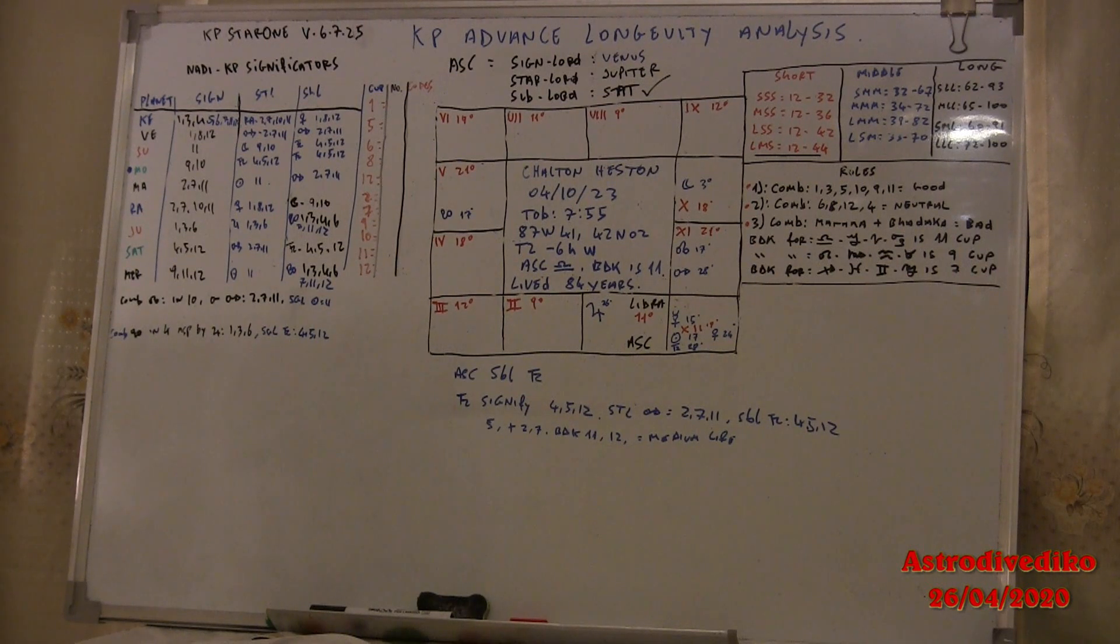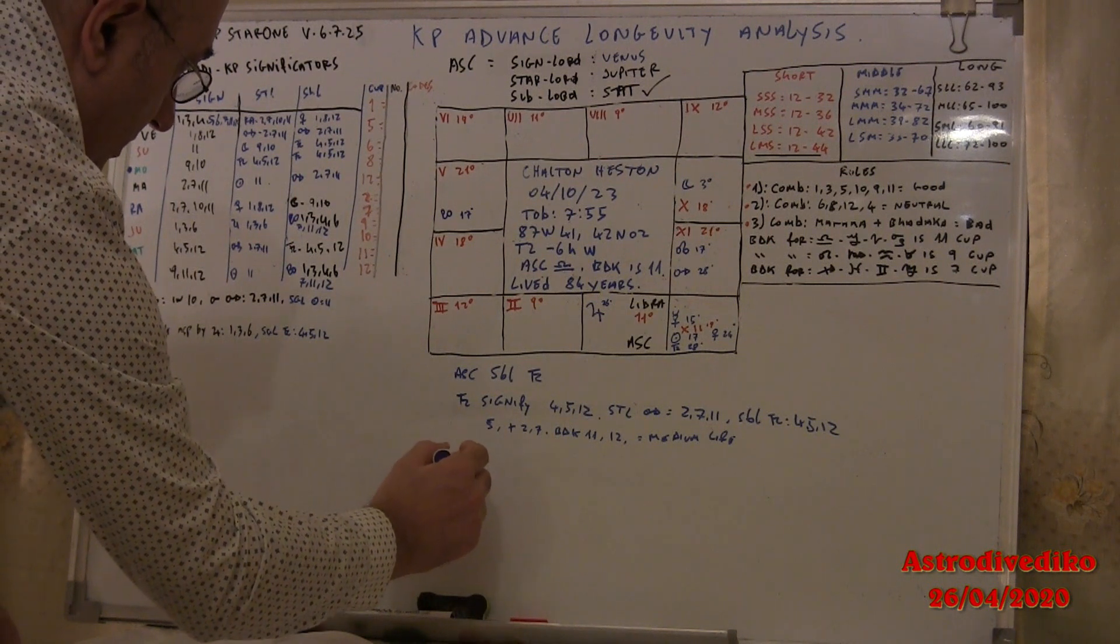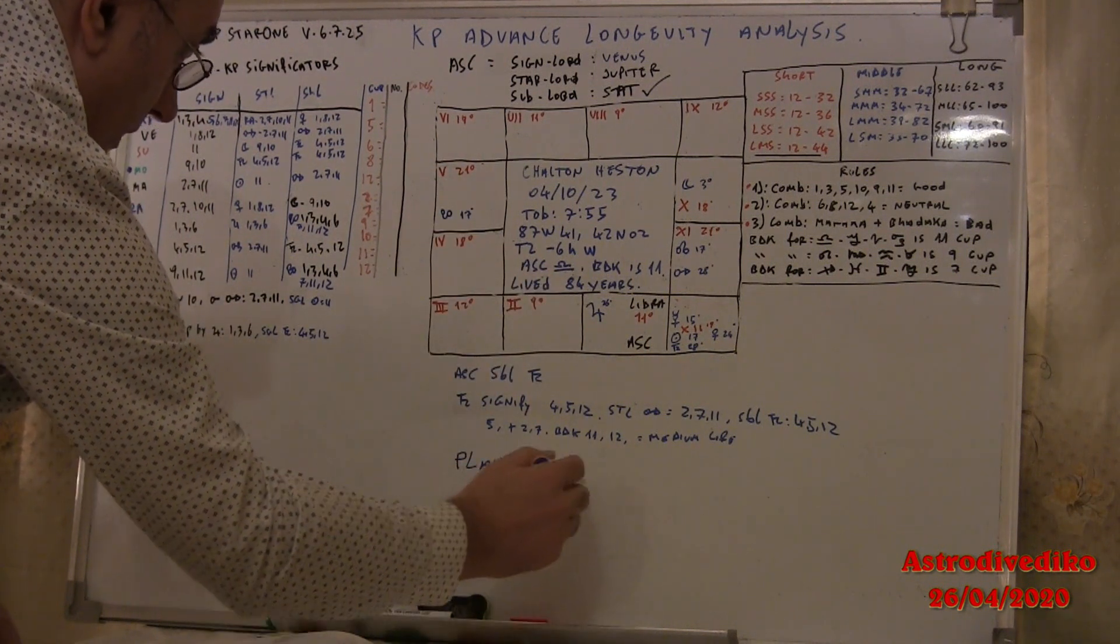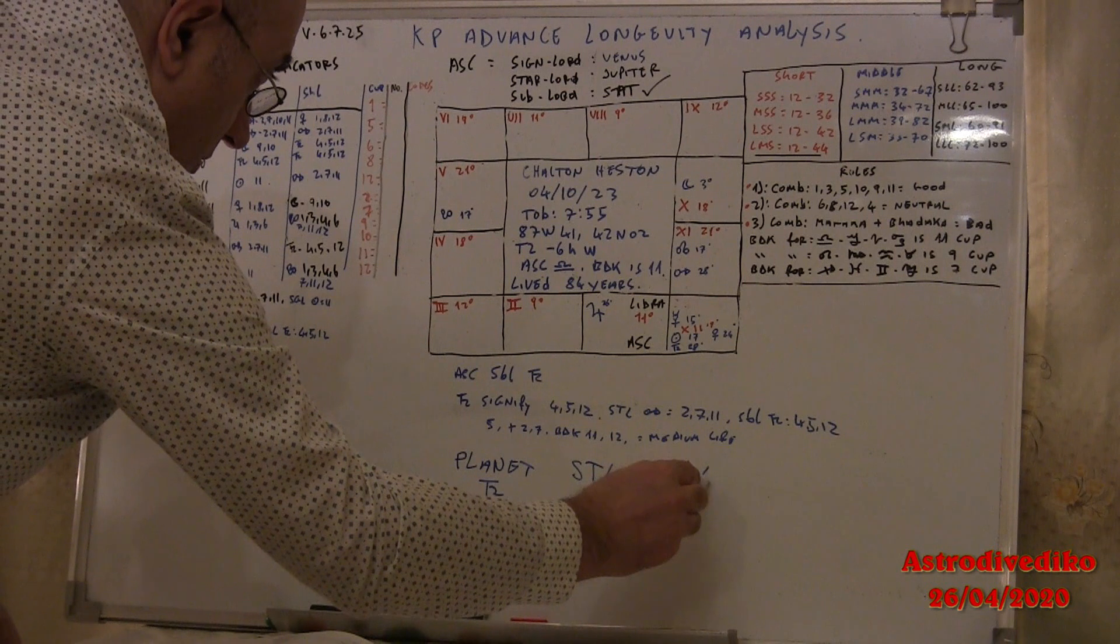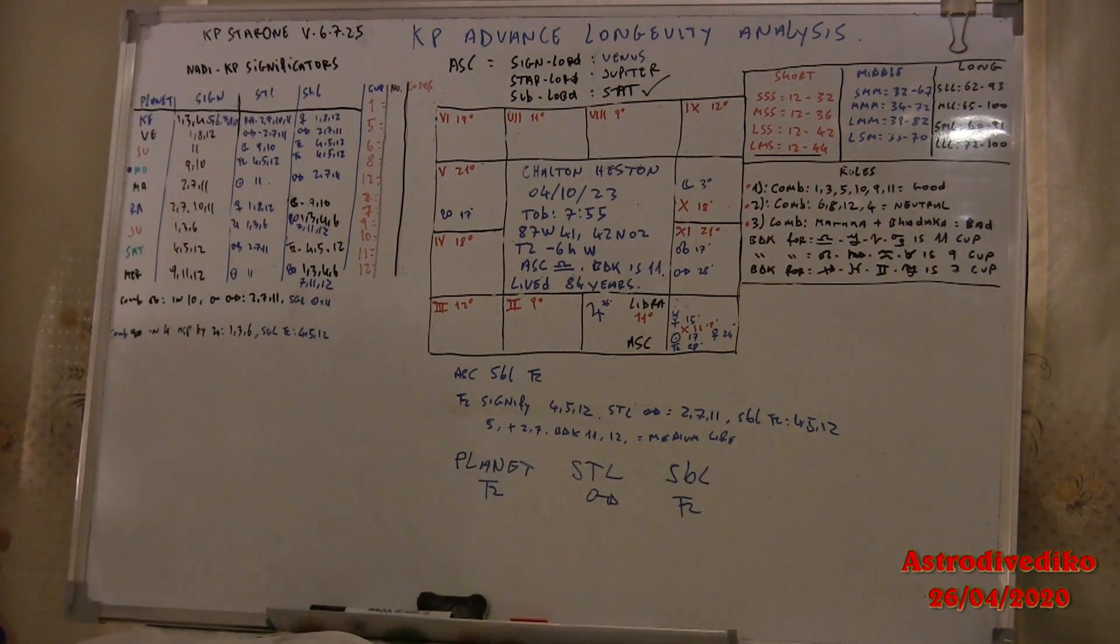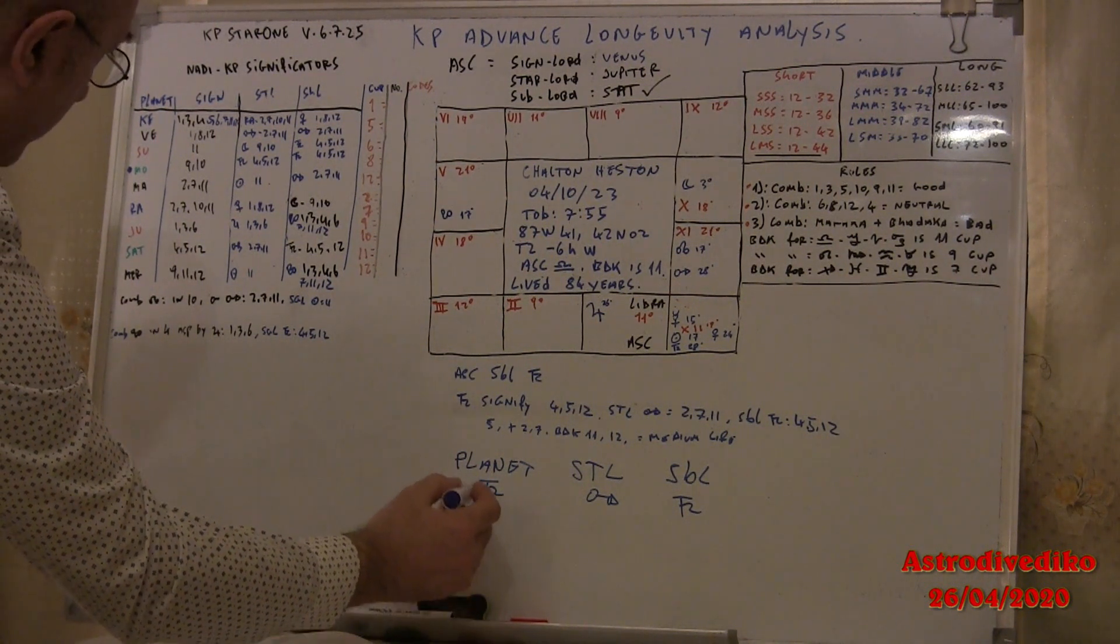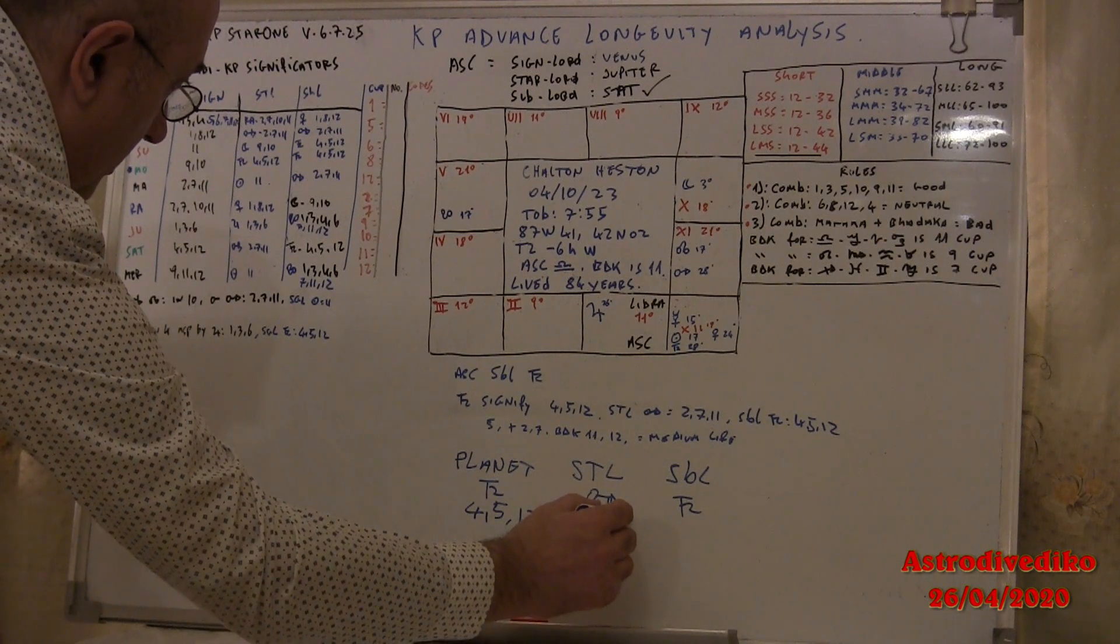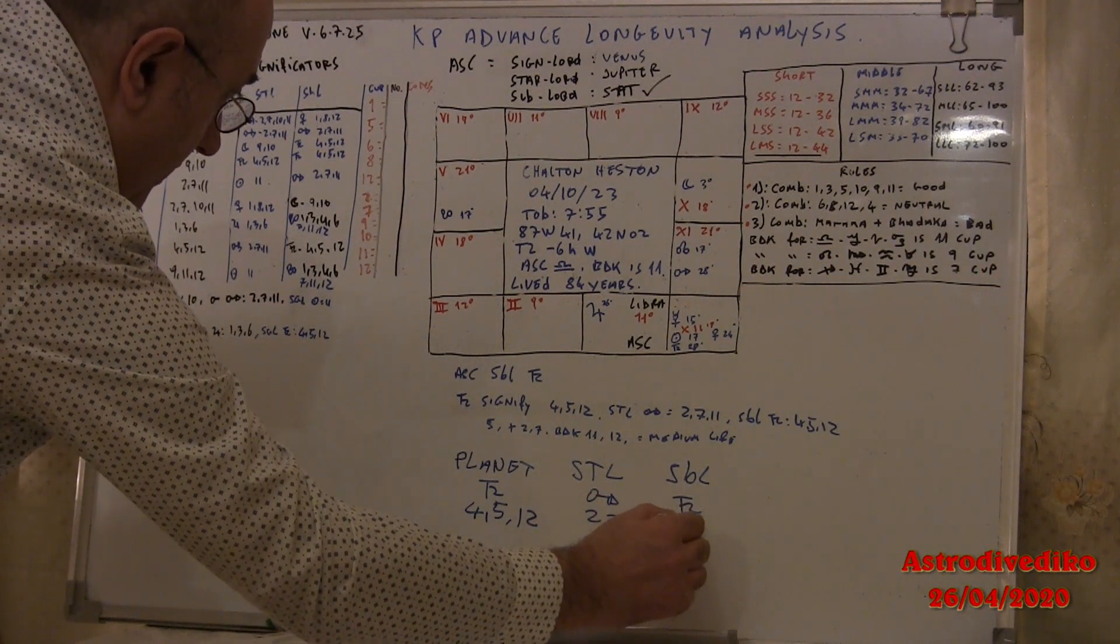Now with my method it will be like this: the planet, the sub lord ascendant is Saturn, right? In star, the star lord would be Mars and the sub lord would be again Saturn. Here are the combinations. You just write here the combination 4, 5, 12. Mars is 2, 7.